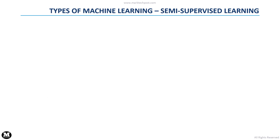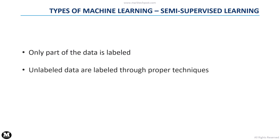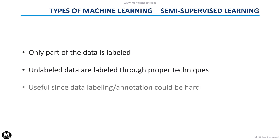Another type of machine learning is called semi-supervised learning. In this case, only a part of the available data has been labeled. Thanks to proper techniques, it is possible to label also the available unlabeled data. This is very useful, since collecting and labeling data can be a very expensive and time-consuming operation.